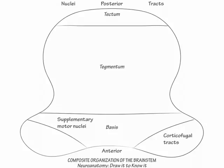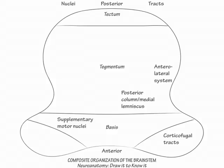Next, in the anterior tegmentum, label the posterior column medial lemniscus pathway — the major large fiber sensory pathway. Then, lateral to it, label the anterolateral pathway, which comprises the spinothalamic, spinal reticular, spinal mesencephalic, and spinotectal tracts. Internal to those pathways, label the trigeminothalamic tracts, which carry sensory coverage from the face.